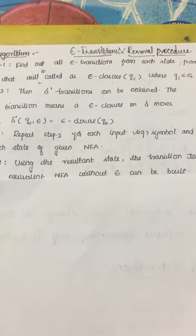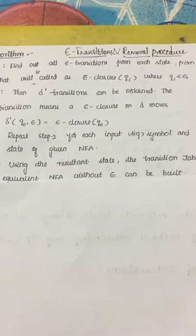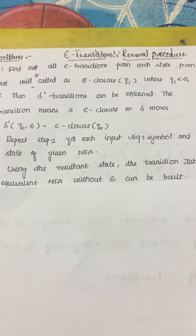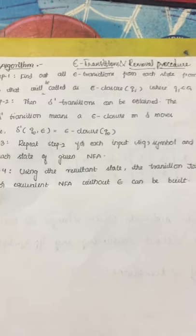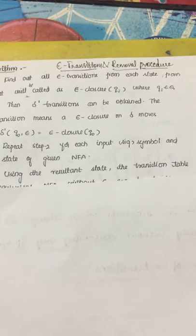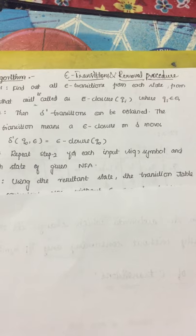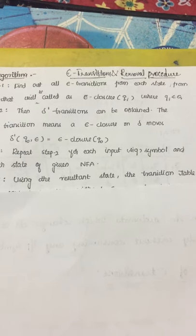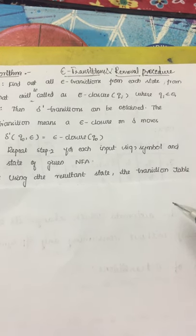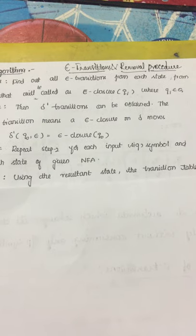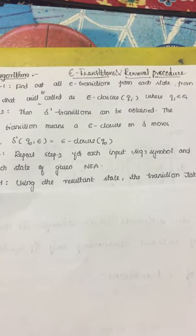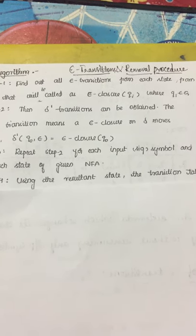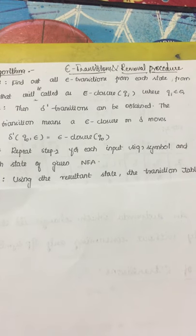Today we are going to discuss epsilon transitions in finite automata and its removal procedure. Epsilon transition is a finite automata which changes its state without consuming any input symbol.